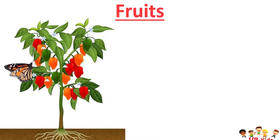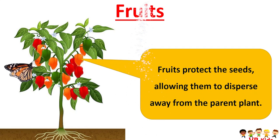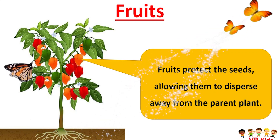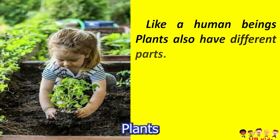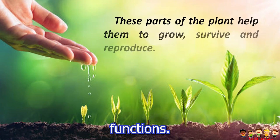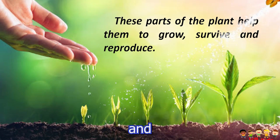Fruits protect the seeds, allowing them to disperse away from the parent plant. Examples of fruits are tomato, mango, and jackfruit. Like human beings, plants also have different parts, and each part performs different functions. These parts help plants to grow, survive and reproduce.